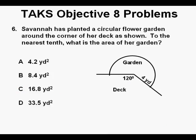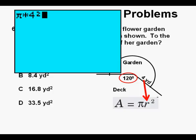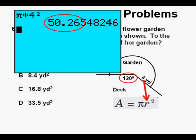Problem 6. Savannah has planted a circular flower garden around the corner of her deck as shown. To the nearest tenth, what is the area of her garden? Here's another area problem. We have the basic area formula, which is A equals pi r squared. We are given two things. The radius of the garden at 4 yards and the angle of the corner of the deck jutting into the garden makes. Surrounding that deck and that's 120 degrees. The area of an entire circle is given by the formula A equals pi times 4 squared. We press enter and get the total area of the circle of a little over 50 square yards.